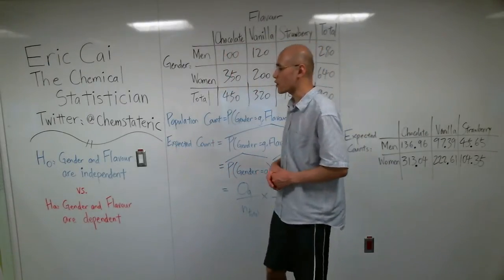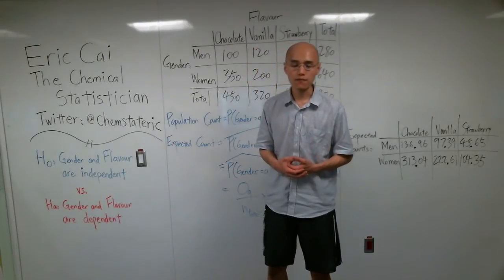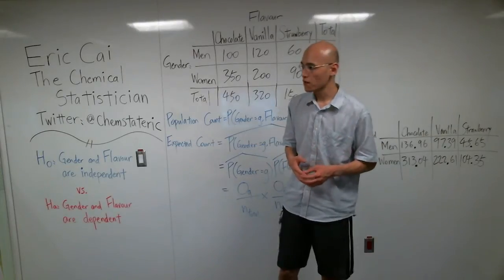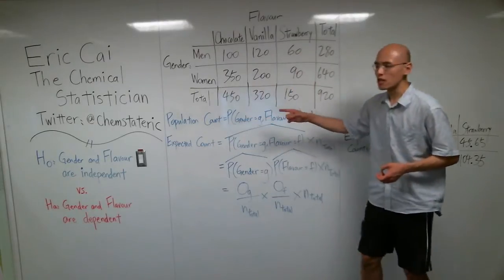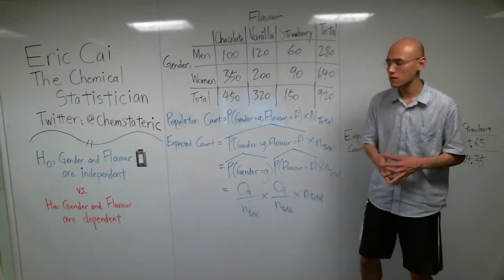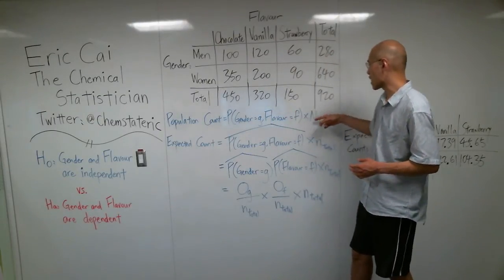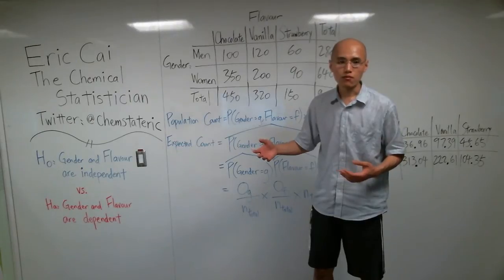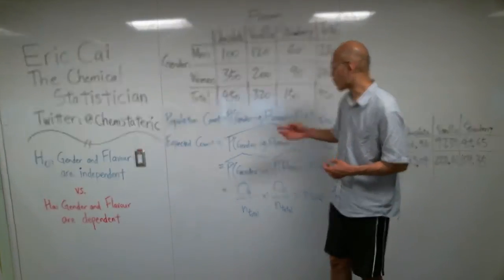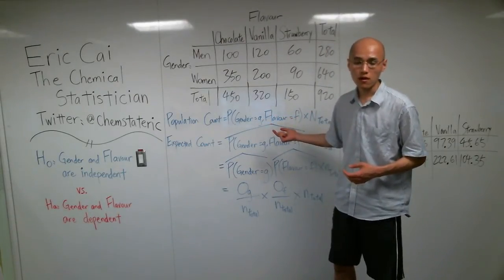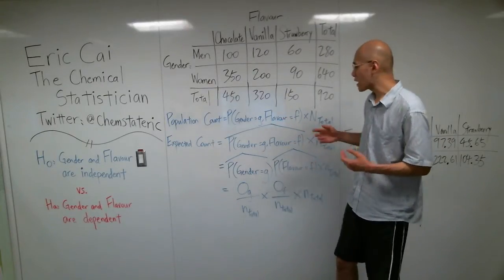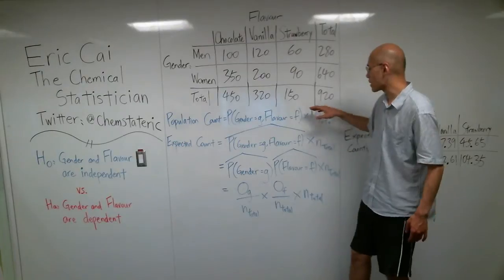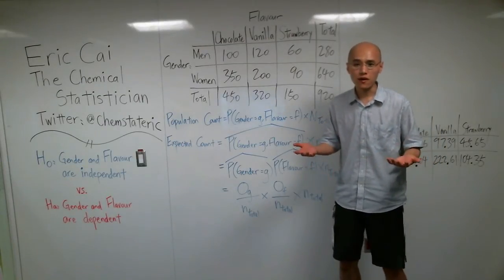Given this null hypothesis, let's figure out how we can use that to determine expected counts. Now, going back to discrete random variables and their probability mass functions. The population count for a particular category is equal to the probability of that category times the grand total. And that is true whether you're talking about a univariate probability distribution with just one random variable or, as in our case, this is a bivariate distribution with two random variables. It doesn't matter if you have a univariate or multivariate distribution, this idea of getting the count by multiplying the probability by the grand total stays the same. And I think that's a pretty intuitive concept to understand.